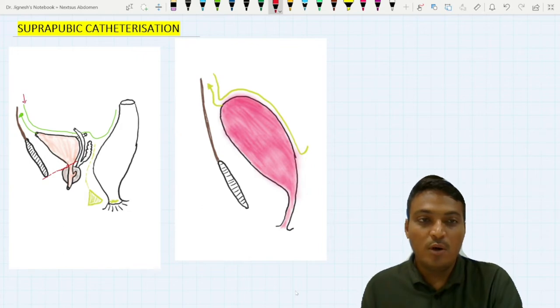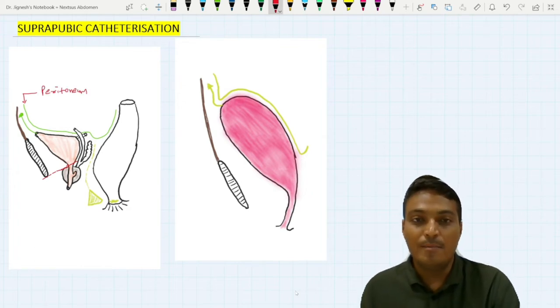The peritoneal fold covers the anterior abdominal wall and then covers its superior surface. But when the bladder is full in case of adult, it becomes ovoid in shape and strips down the peritoneal fold from its superior surface, making the anterior surface of the urinary bladder and the anterior abdominal wall in direct contact.